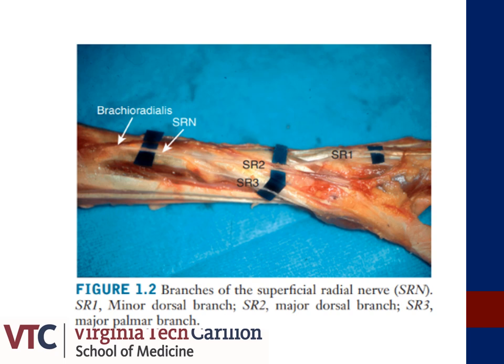An additional portal not previously discussed is the 1-2 portal. This portal is located between the APL and the ECRB tendons. It is a less often utilized portal; however, it can provide access to the radial styloid and the radial-most aspect of the radiocarpal joint. One caution to utilizing the 1-2 portal is the relationship of the portal's location with the radial sensory nerve, which courses along the radial and distal aspect of the forearm and hand.